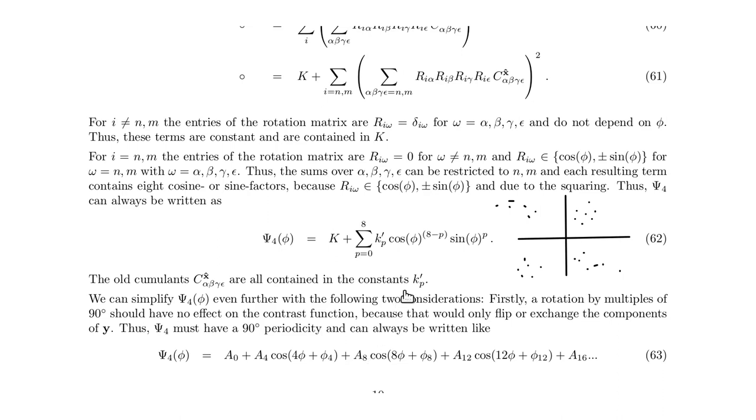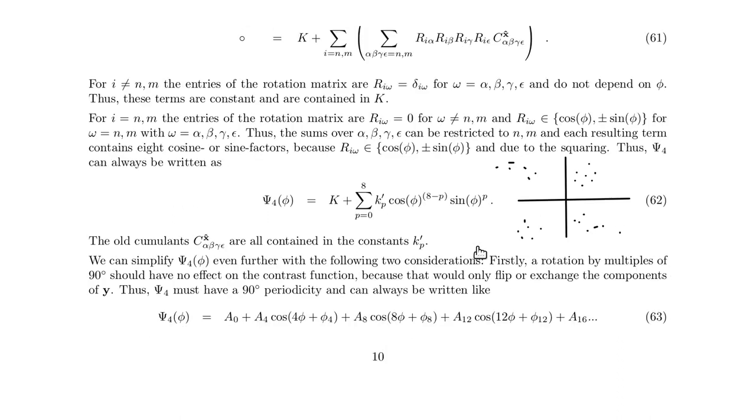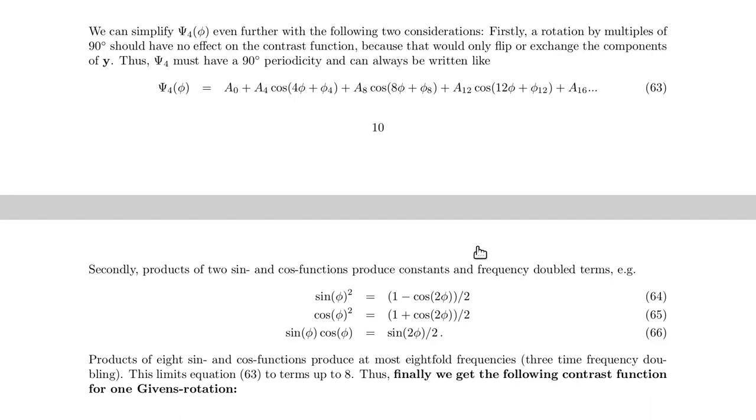The second observation is, we have seen here that each term is a product of eight cosine and sine values. Now we know from trigonometry that if you square a sine or cosine, or you multiply sine and cosine, that you get frequency doubling.